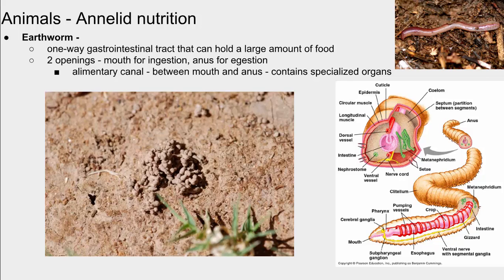Earthworms, an annelid, have a digestive tract more like ours. It has two openings — a mouth and an anus. Food enters through the mouth and exits through the anus. The earthworm basically ingests soil as it digs through it. The food goes through their digestive tract, which is made up of various parts — esophagus, gizzard, intestine — similar in some ways to ours. Along the way, the organic material is digested and absorbed into their blood. Anything undigested comes out the other end — those are called earthworm castings.